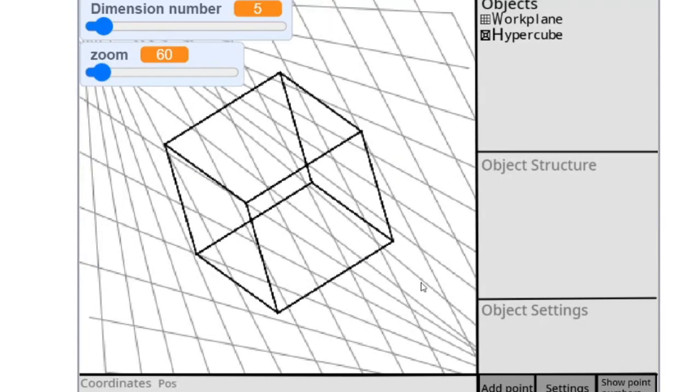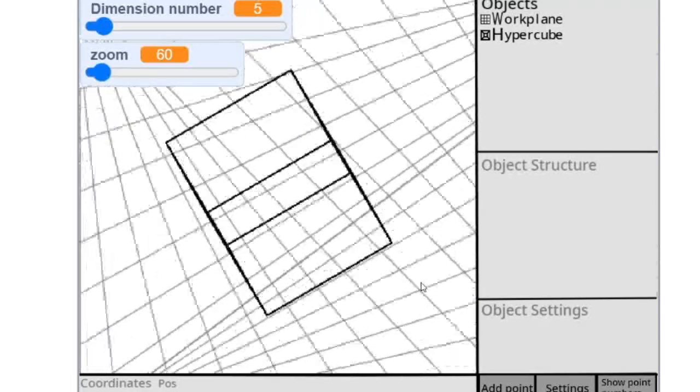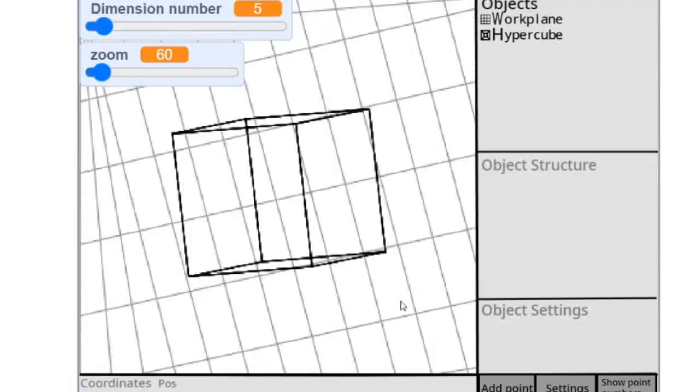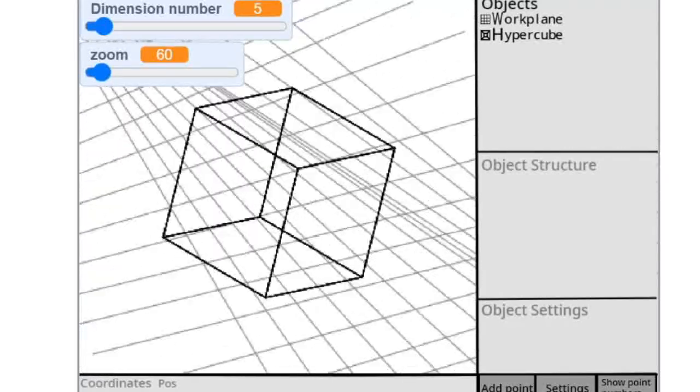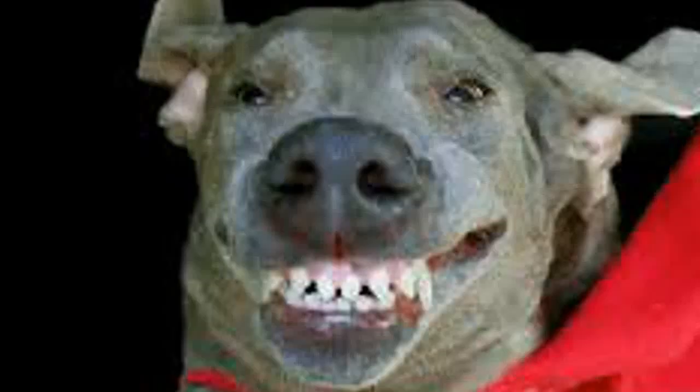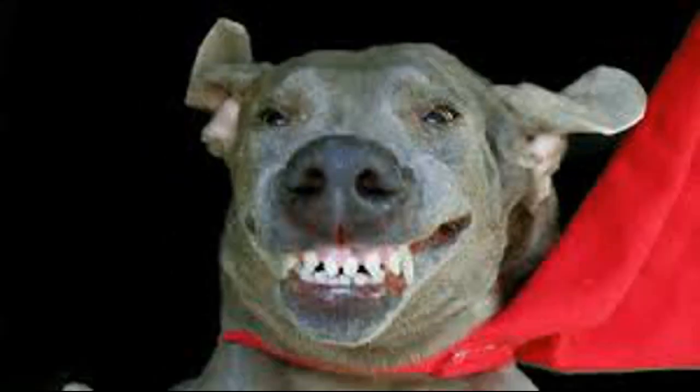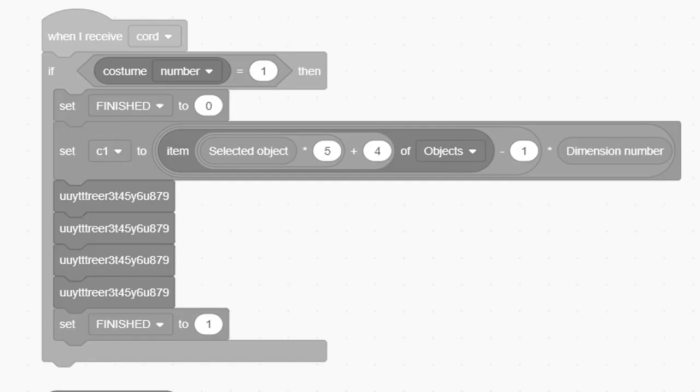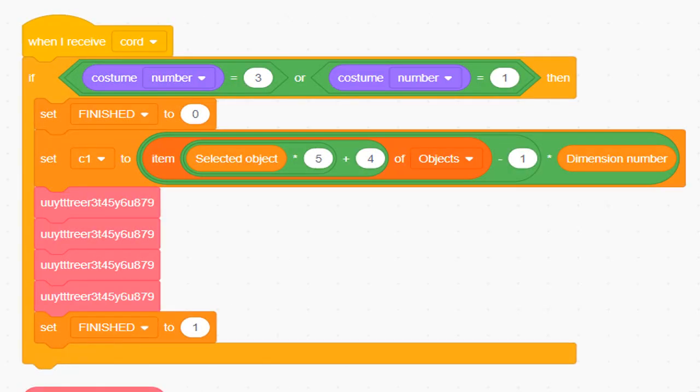Also, because the work plane was big, and since small sprites can't go past the 480x360 border, I had to make a new costume that was huge. I just kept on expanding a rectangle until it was like 10,000 by 10,000 pixels. This broke the coordinate changing system that was based on costume numbers, so I fixed that.